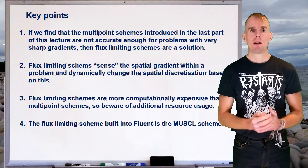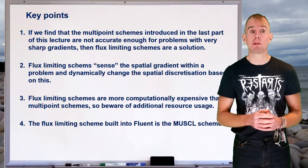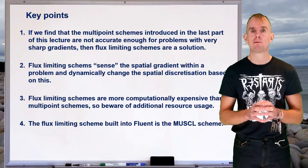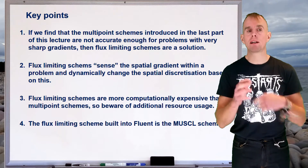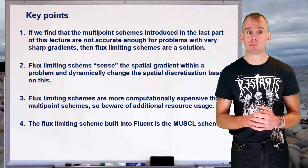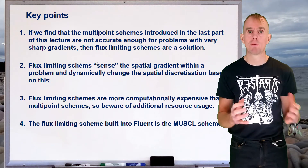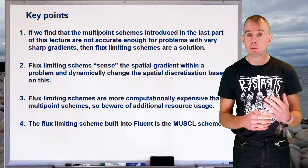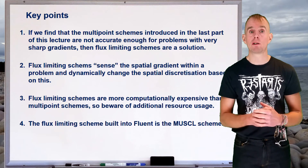Let's recap a few key points. If you're dealing with problems that involve very, very sharp gradients — and the 1D wave equation is a good example — then multipoint schemes probably won't be accurate enough. There is a set of schemes called flux limiters that are very good for these contexts. Flux limiting schemes rely on sensing the spatial gradient and dynamically changing the spatial discretization accordingly. Consequently, they are more computationally intensive, so be aware of additional resource and memory overhead. Within Fluent, the flux limiting scheme is the MUSCLE scheme, and you'll probably only need it for compressible flows with shock waves or immiscible two-phase flows with phase boundaries.